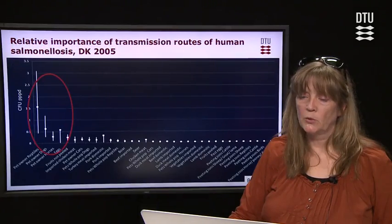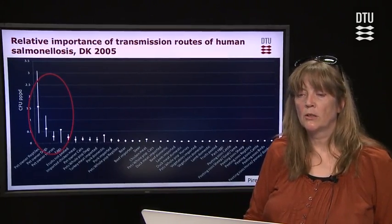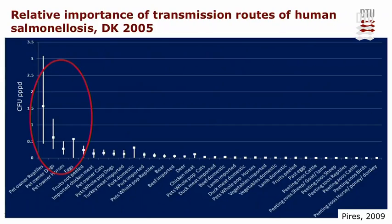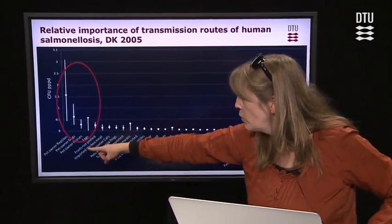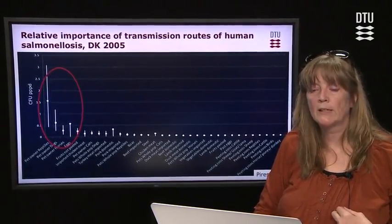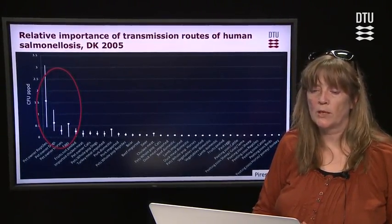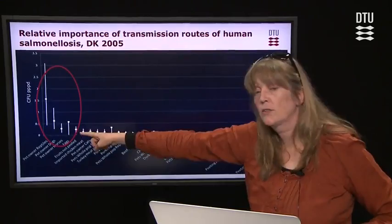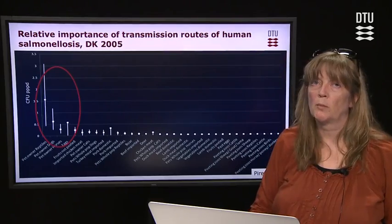There is a lot of uncertainty involved. Here are results from a study using Danish data from 2005, illustrating the relative importance of transmission routes for human salmonellosis. One advantage of this method is that we can include sources not necessarily part of integrated national surveillance. Notably, specific risk groups emerged as having high exposure — particularly pet owners of reptiles, dogs, and horses. This is because they are a limited population but exposed relatively often on a daily basis, and reptiles are known to be an important reservoir of salmonella. Among food exposures, the highest was eggs, which is consistent with results from other source attribution methods.